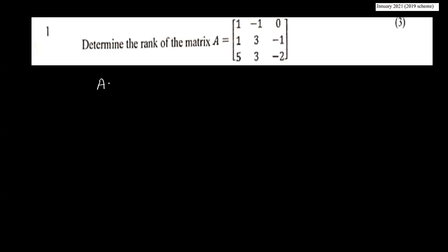Determine the rank of the matrix equal to [[1, -1, 0], [1, 3, -1], [5, 3, -2]]. So, let's see how the matrix is equal to 1, minus 1, 0, 1, 3, minus 1, 5, 3, minus 2.